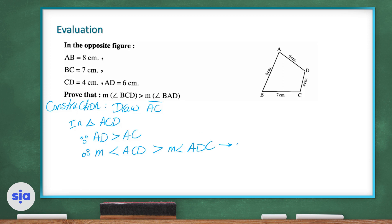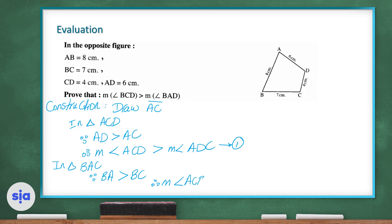In triangle ACD, since AD is less than AC, therefore the measure of angle ACD is greater than the measure of angle ADC — call this inequality number 1. In triangle BAC, since BA is greater than BC, therefore the measure of angle ACB is greater than the measure of angle BAC — call this inequality number 2.